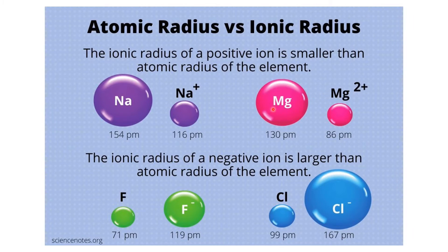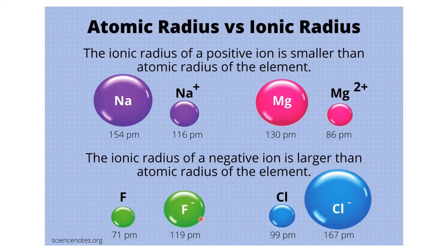The same applies to magnesium — the magnesium atom is larger than the magnesium ion. For negative ions, consider fluorine: it has 9 protons and 9 electrons. When it gains one electron to form F⁻, it has 9 protons but 10 electrons. The added electron increases repulsion among electrons, weakening the net attraction, so the ion expands. Negatively charged ions are always larger than the corresponding neutral atom.